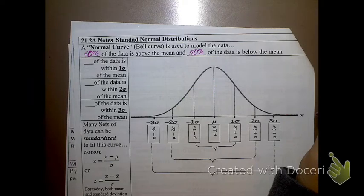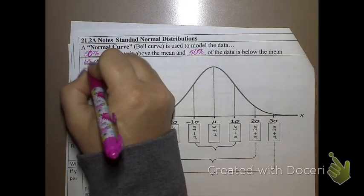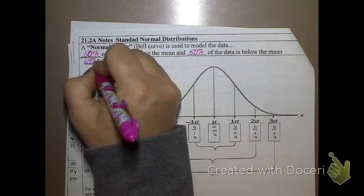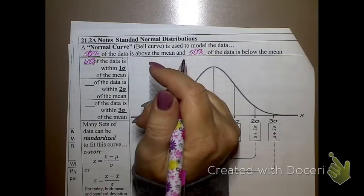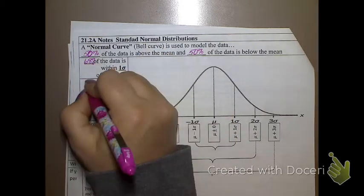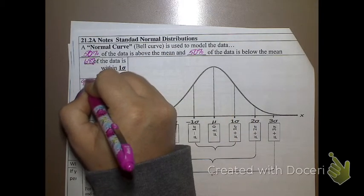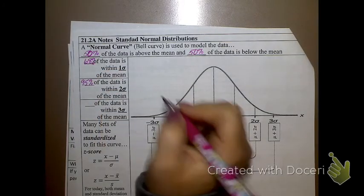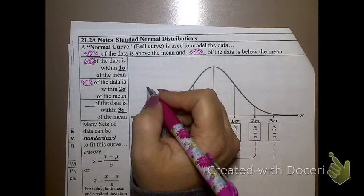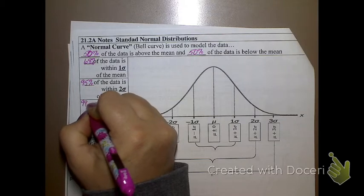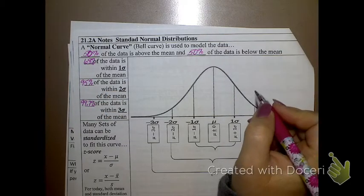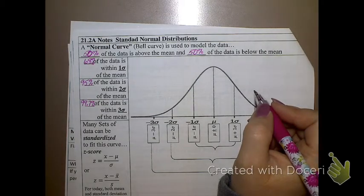Now I'm going to give you the three most important numbers of this module. You ready? 68. 68% of the data is within one standard deviation of the mean. Just focus on the 68 right now. Ready for the next important number? 95% of the data is within two standard deviations of the mean. And the last important number? 99.7% of the data is within three standard deviations of the mean.